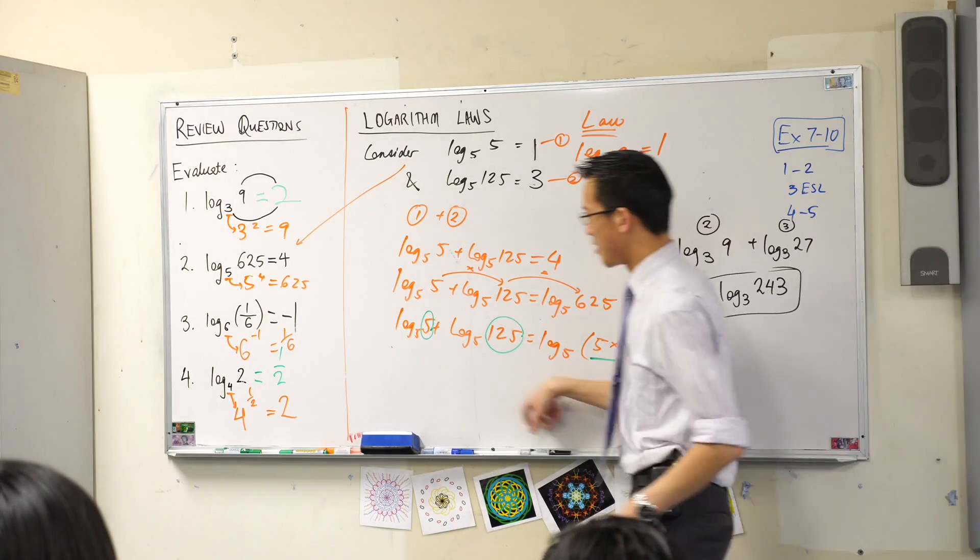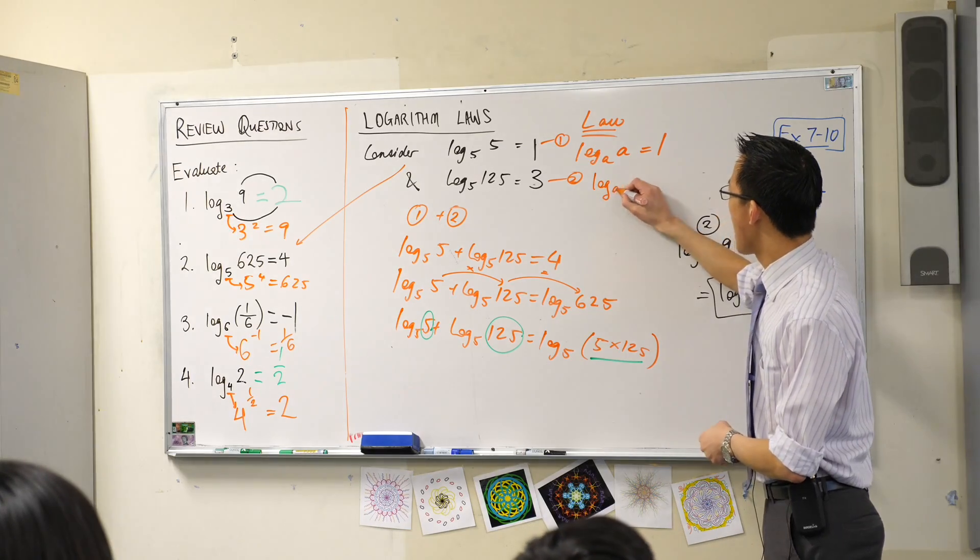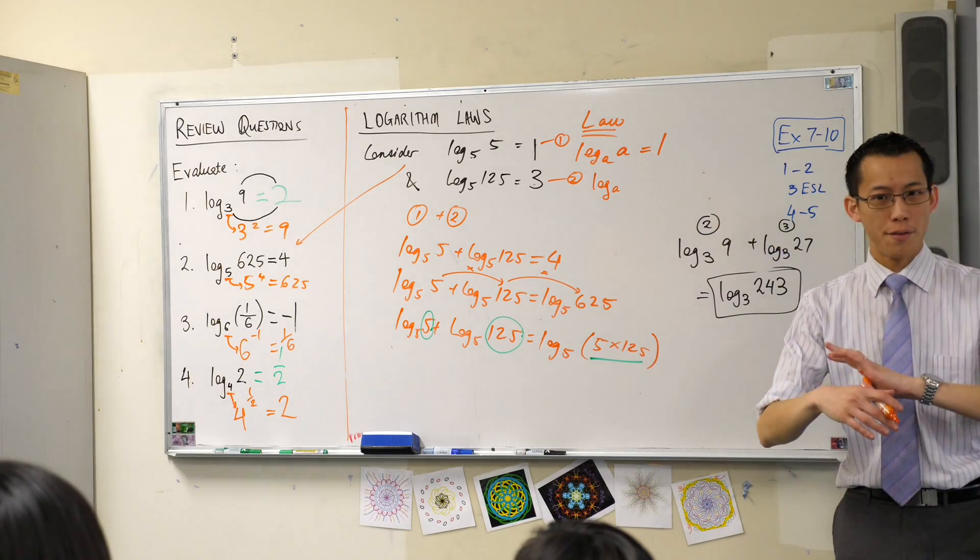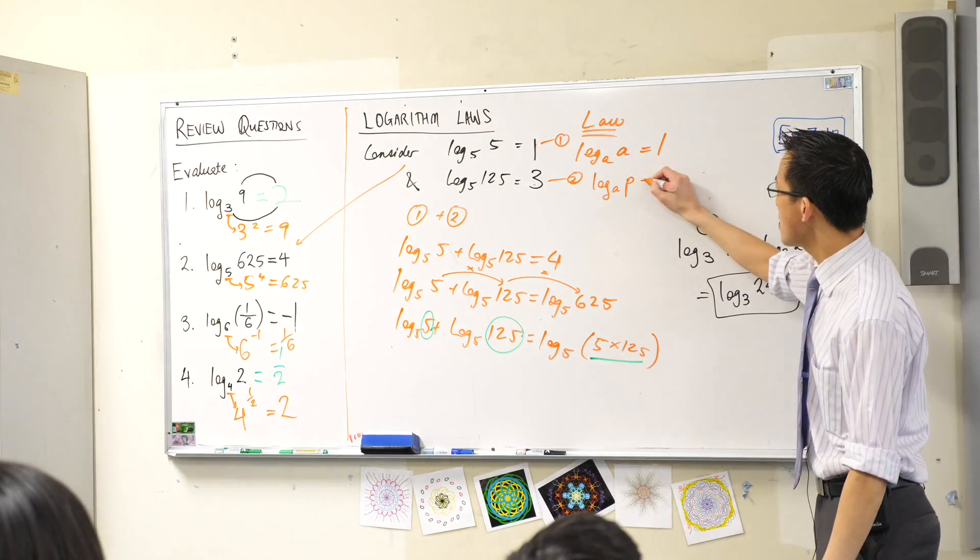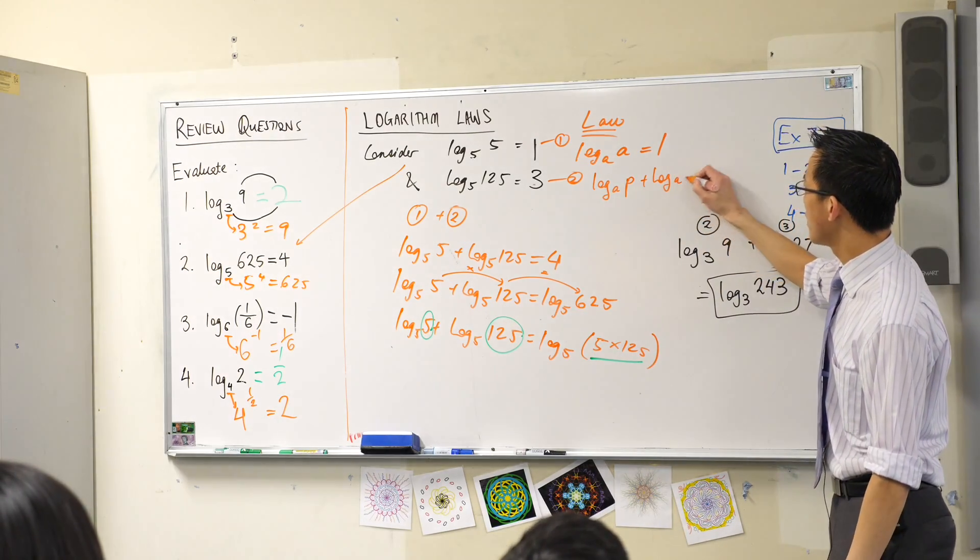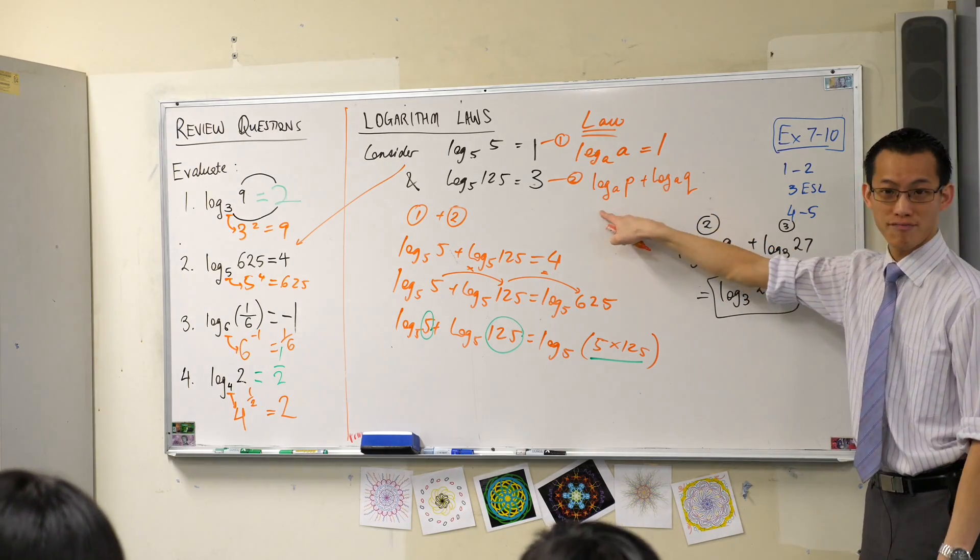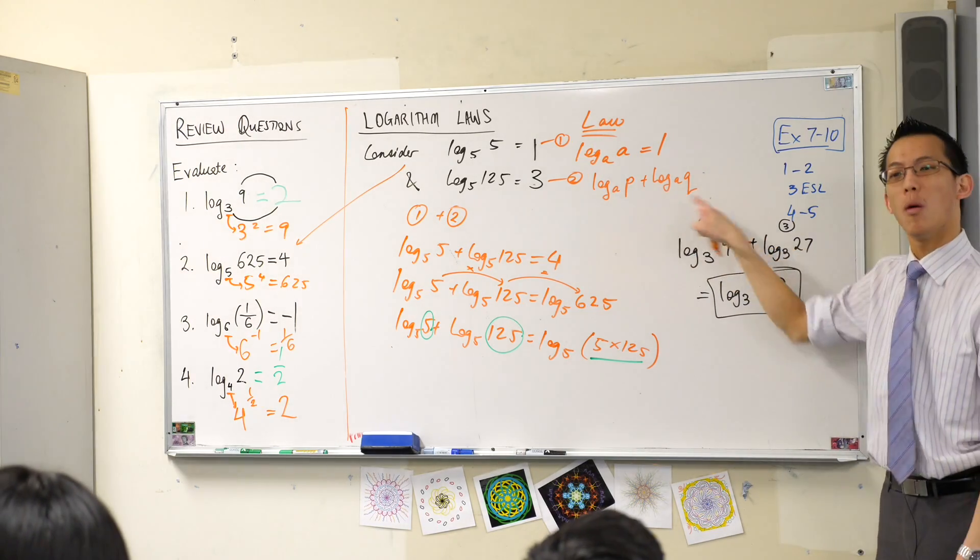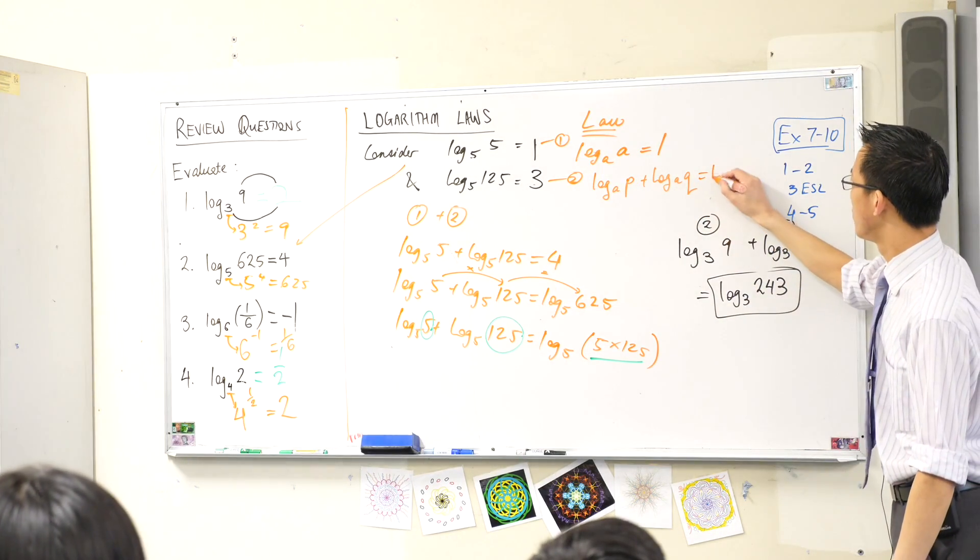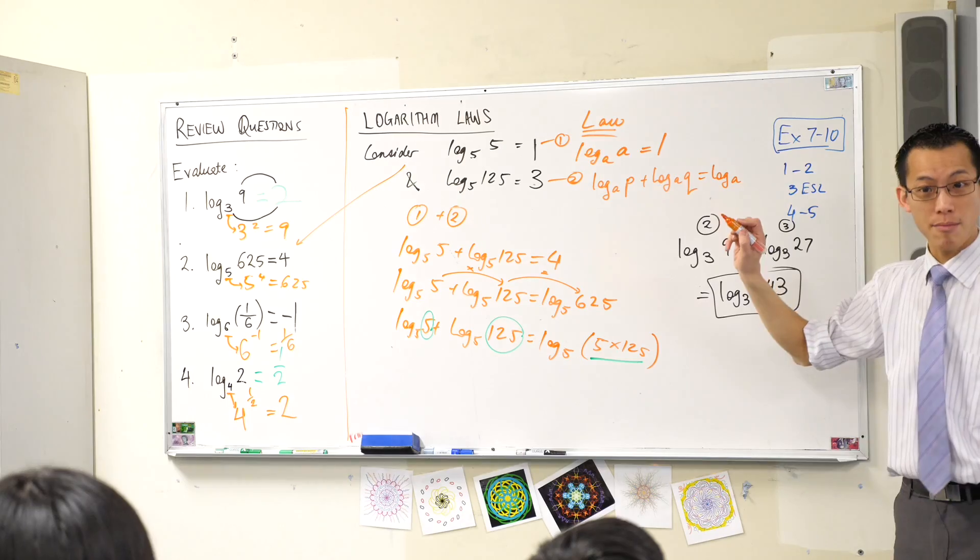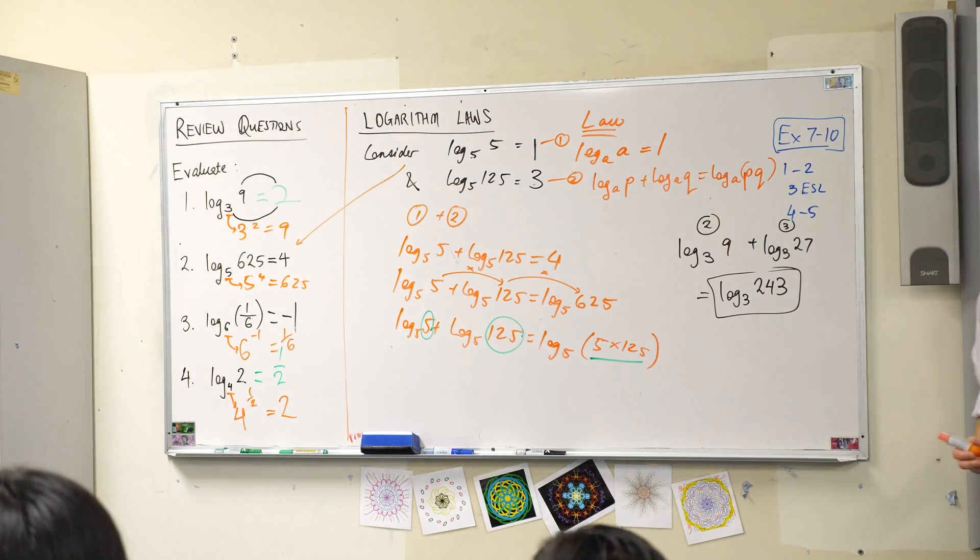So I'm going to write a law now. I'll go back to orange. The law is that log base, let's say, A, of a number, any numbers you like. These could be anything. So I'm going to call these guys P and Q. You've got the same base, but you've got any two numbers here you like. What will you do to those numbers? How will you combine them? You will multiply them. The base stays the same, but you multiply those two numbers together.